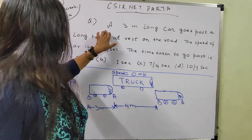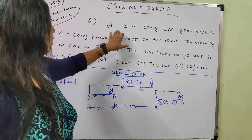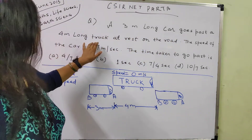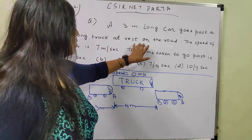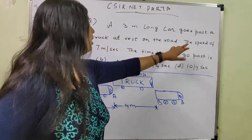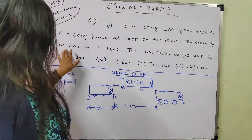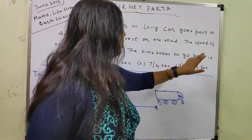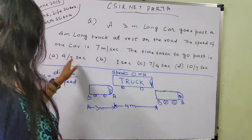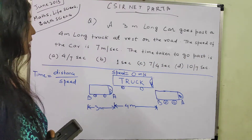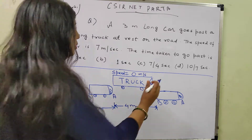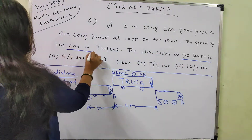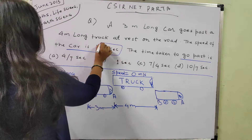Lecture number 3: A 3 meter long car goes past a 4 meter long truck at rest on the road. The speed of the car is 7 meters per second. The time taken to go past is — we have to understand what 'go past' means, and the speed of the car is given as 7 meters per second.